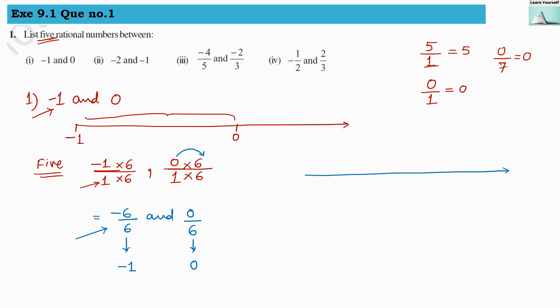Let us plot these numbers on the number line. Here 0 by 6 equals 0 and minus 6 by 6 equals minus 1. Now it is easy to write the 5 rational numbers in between. As we go towards the right from minus 6 by 6, we get: minus 5 by 6, minus 4 by 6, minus 3 by 6, minus 2 by 6, and minus 1 by 6. All these numbers are rational numbers between minus 6 by 6 and 0 by 6.